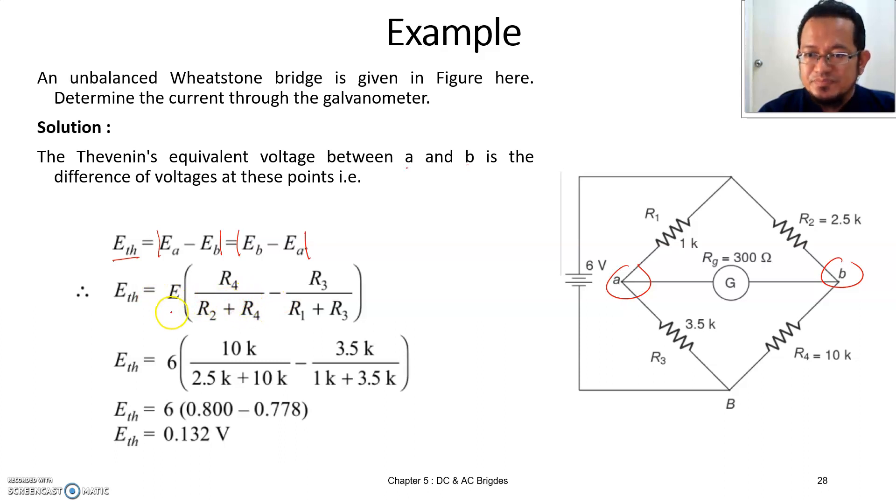Remember from the formula that I showed you before, the Thevenin voltage is simply the source voltage here, which is E here, equals to 6 volts multiplied by the ratio of R4 and R2, basically for resistor on this arm of the branch.